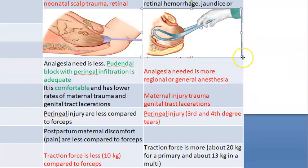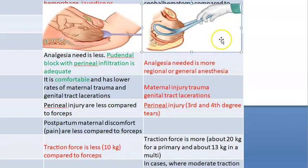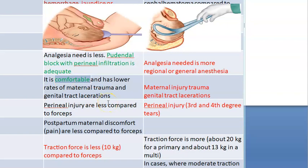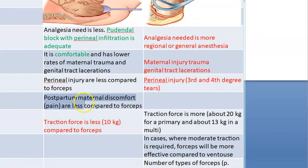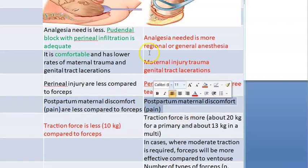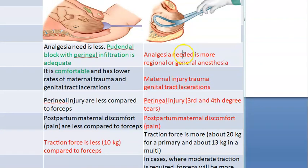Looking at the mother's perspective: more analgesia is needed in forceps delivery - with ventouse she doesn't need as much. Regional or general anesthesia is required with forceps. There can also be maternal injury - genital tract laceration and perineal injury - with forceps, and postpartum discomfort. So mother-wise, forceps looks bad and ventouse is better.